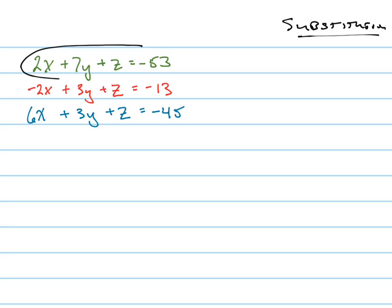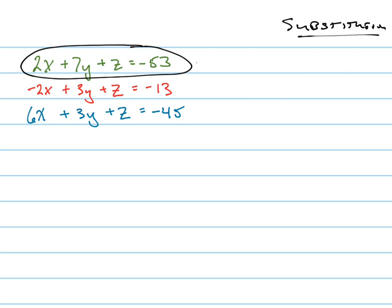You're going to take one of the equations and solve it for one of the variables, and then you're going to plug that in to another equation. Solve it for one of the remaining two variables, then plug that — along with the first substitution — into the last equation until you get just one variable and can solve for it. So that's the process. Let's do it.